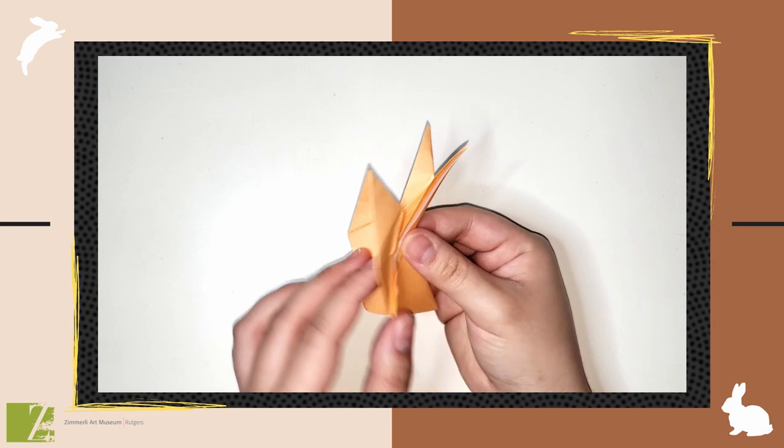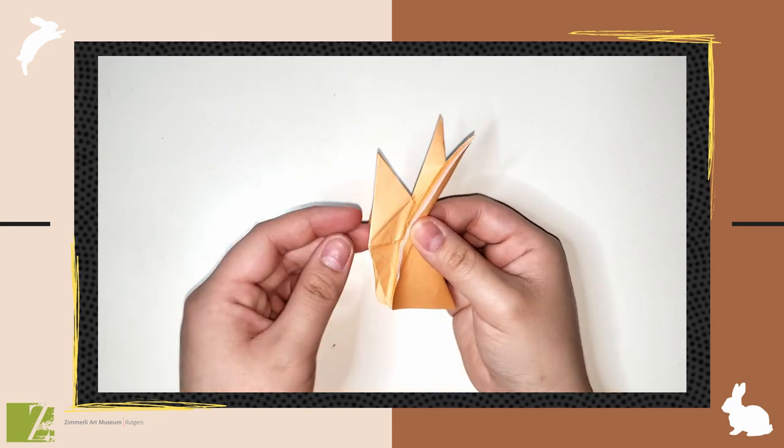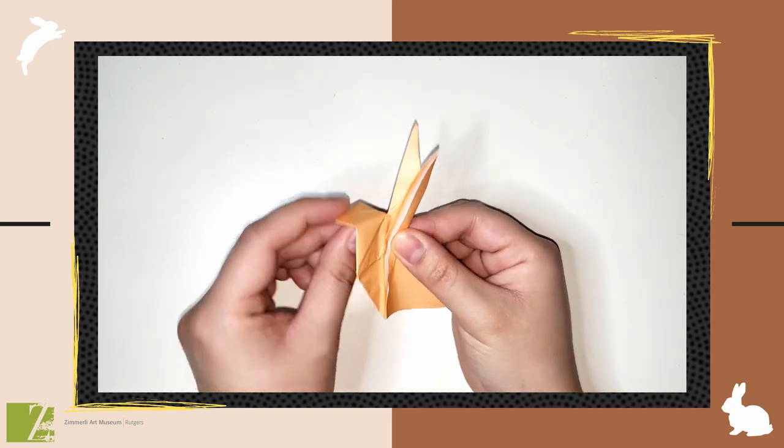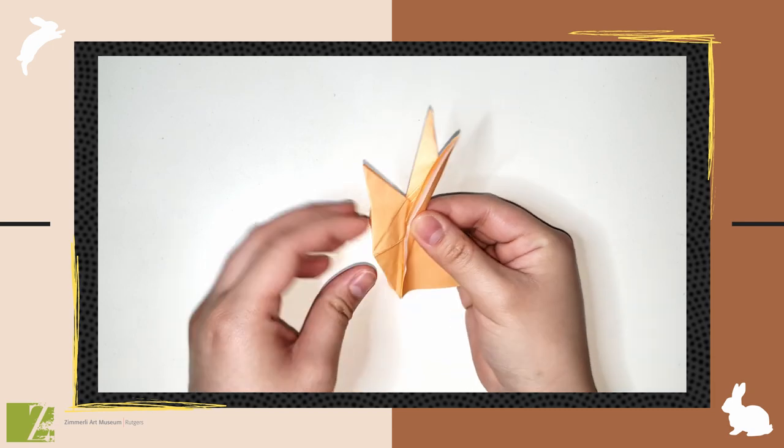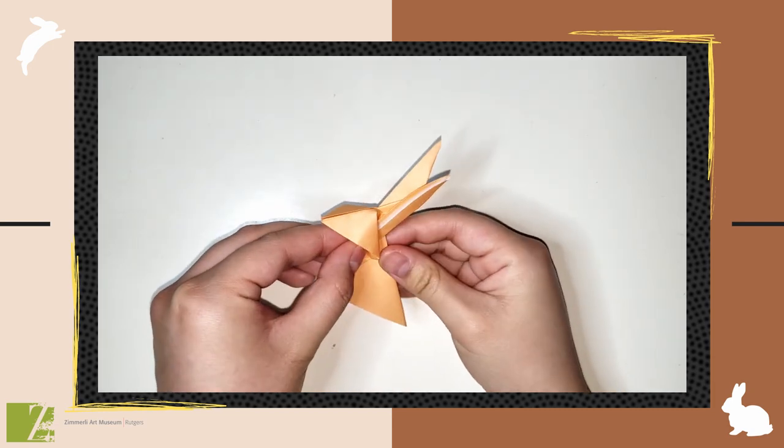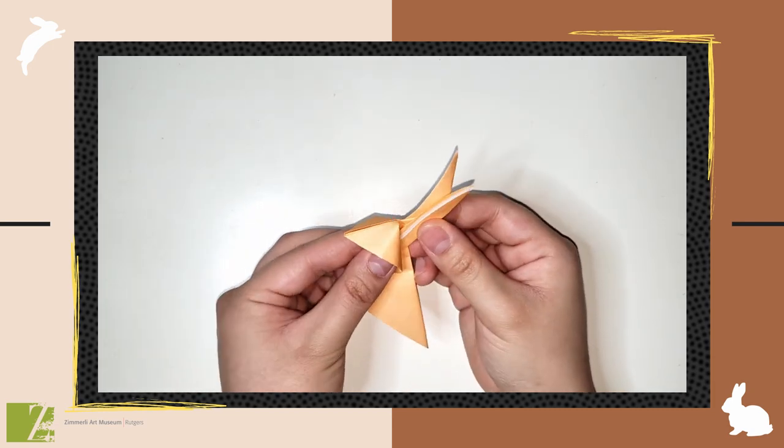Hold onto the ears at the head. You're going to open out the bottom flaps while folding the top section downwards. The bottom flaps should be pushed over to the top of the ears on both sides of the rabbit.